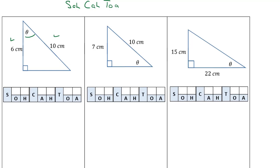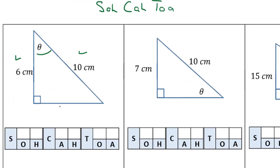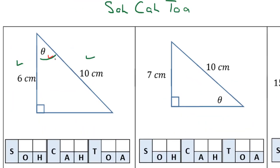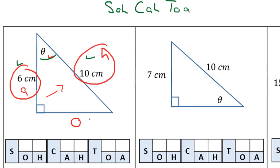We have to determine which one of the trig ratios we're going to use to calculate the unknown angle in each one of these triangles. To do that we have to start by labeling everything. Theta is up in this corner here, so that means the opposite is down here. The hypotenuse is always opposite the 90 degree angle and this side is the adjacent. So in this case we know the adjacent and we know the hypotenuse, so we are going to use a trig ratio that combines adjacent and hypotenuse, which is the cosine ratio.